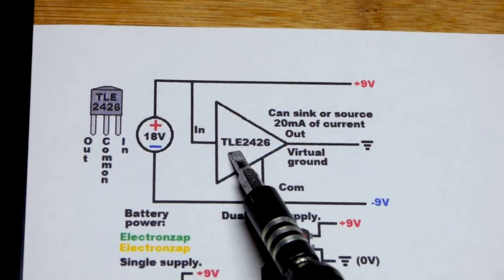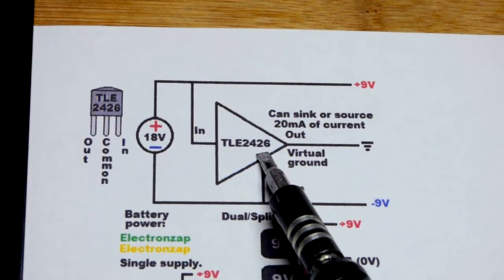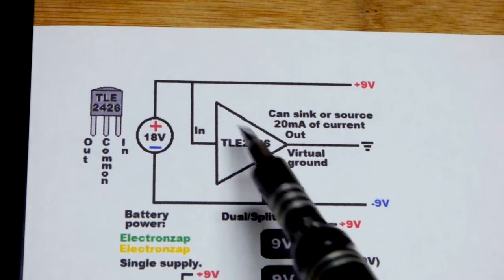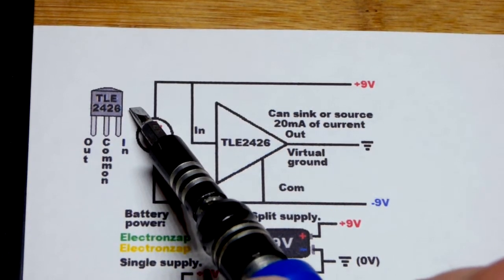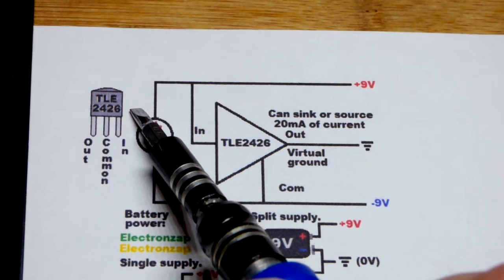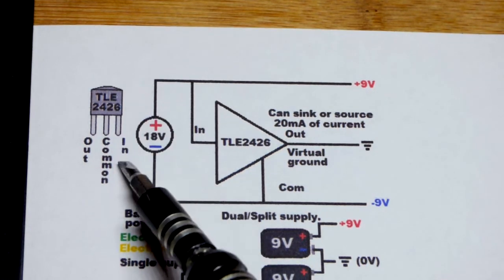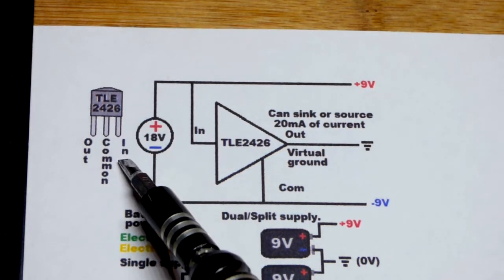Now in this video we're going to look at the TLE 2426. It's an integrated circuit but it's in the same standard packaging of the common transistor, the TO92 package, the basic transistor that comes in learning electronics kits.